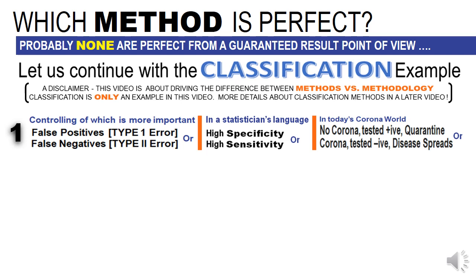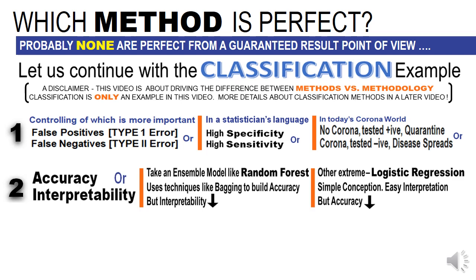In simpler language, in today's corona world: a false positive is someone who does not have corona but is tested positive and asked to go on quarantine. Is it bad? Yes, it is bad. But what's a false negative? Someone who has corona but is tested negative and asked not to take any medicines. Is it bad? That is terrible, because it not only spreads disease within him, he can spread disease to the community. So the implication of false positive versus false negative, or type 1 versus type 2, are not the same for different nature of problems.